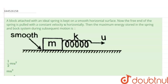A block attached with an ideal spring is kept on a smooth horizontal surface, meaning there is no friction between the block and the surface. The free end of the spring is pulled with a constant velocity u horizontally. We have to find the maximum energy stored in the spring and block system during subsequent motion.